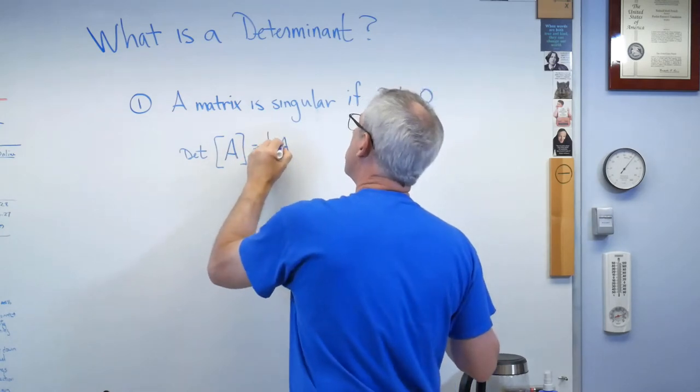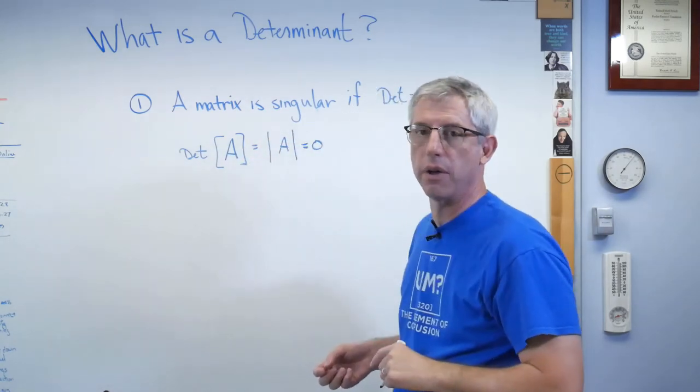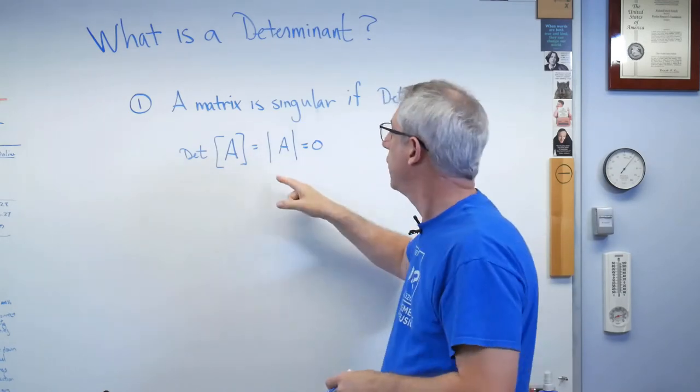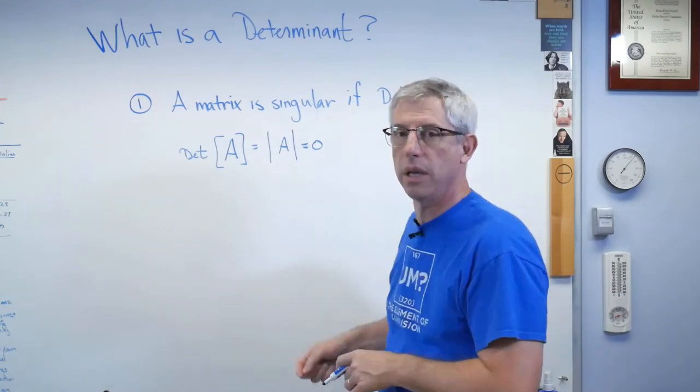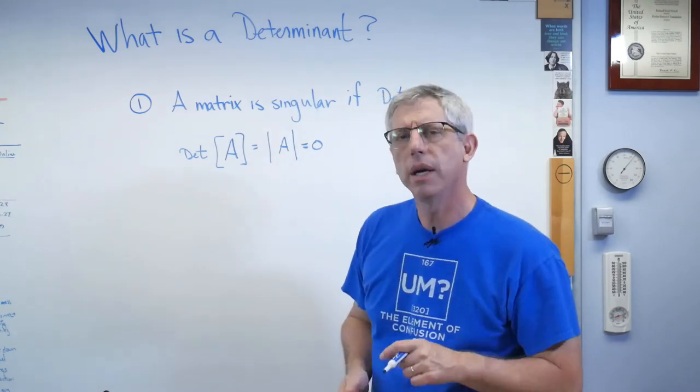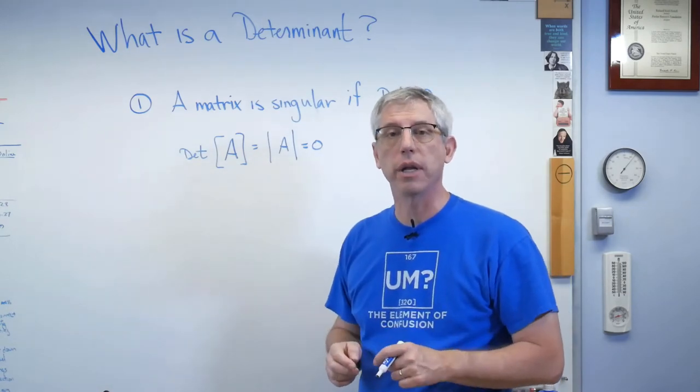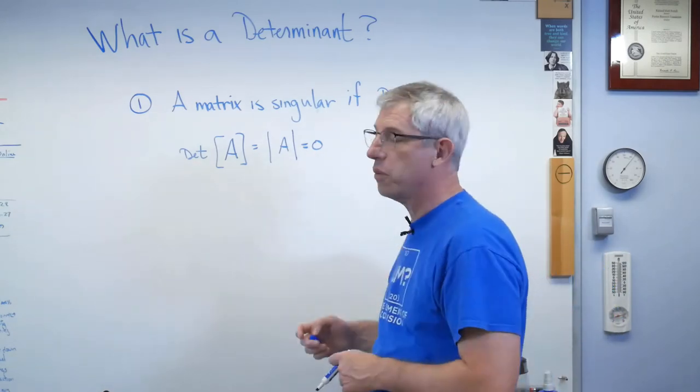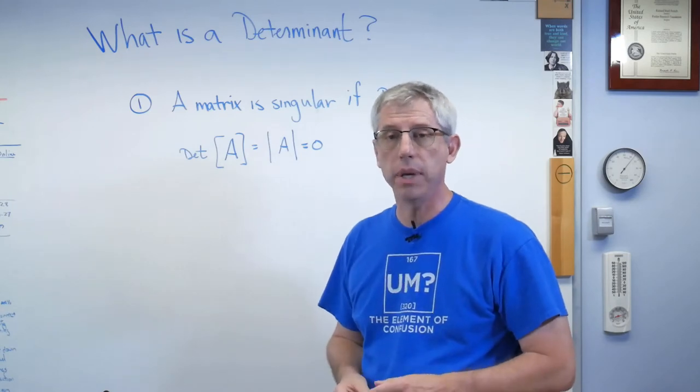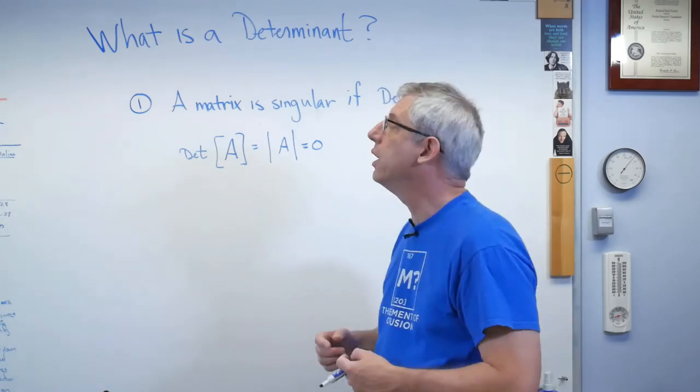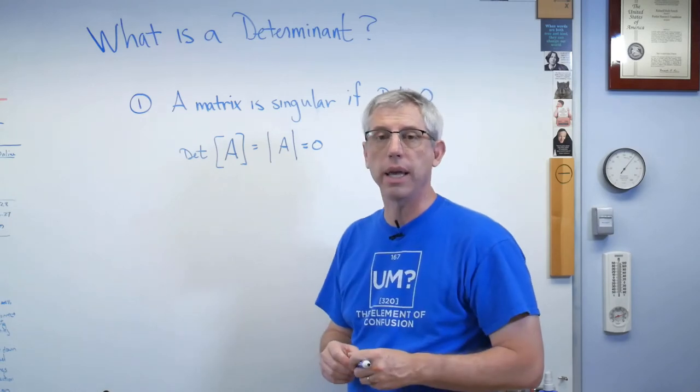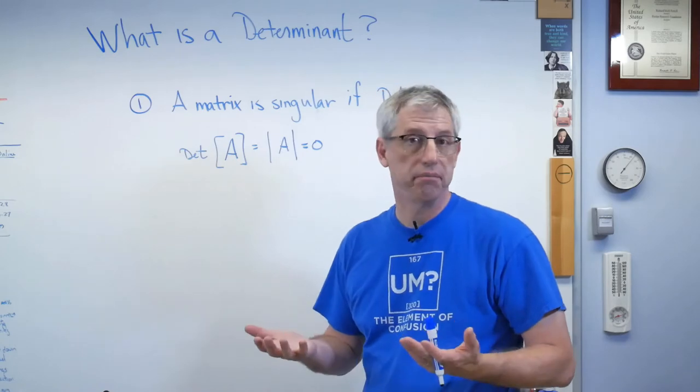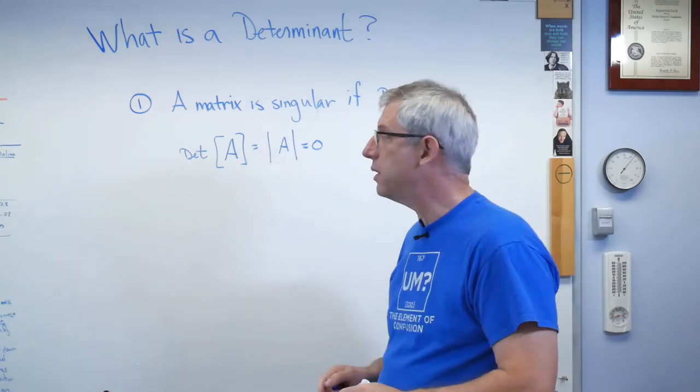But mathematicians have a more compact notation. Whatever else you think about mathematics, it's compact, it's tight, it's concise. Okay? So, this is what you'll see in the books. Now, this is not an absolute value. It's not the absolute value of a vector. This just means determinant. If the determinant of a matrix is zero, it's singular. Remember what singular means? Singular means you can't invert it. Just like you can't divide by zero in the scalar world, in the matrix world, not all matrices can be inverted. Not all matrices have inverses. Trying to multiply by the inverse of a singular matrix is at least analogous to trying to divide by zero. So, that's number one.